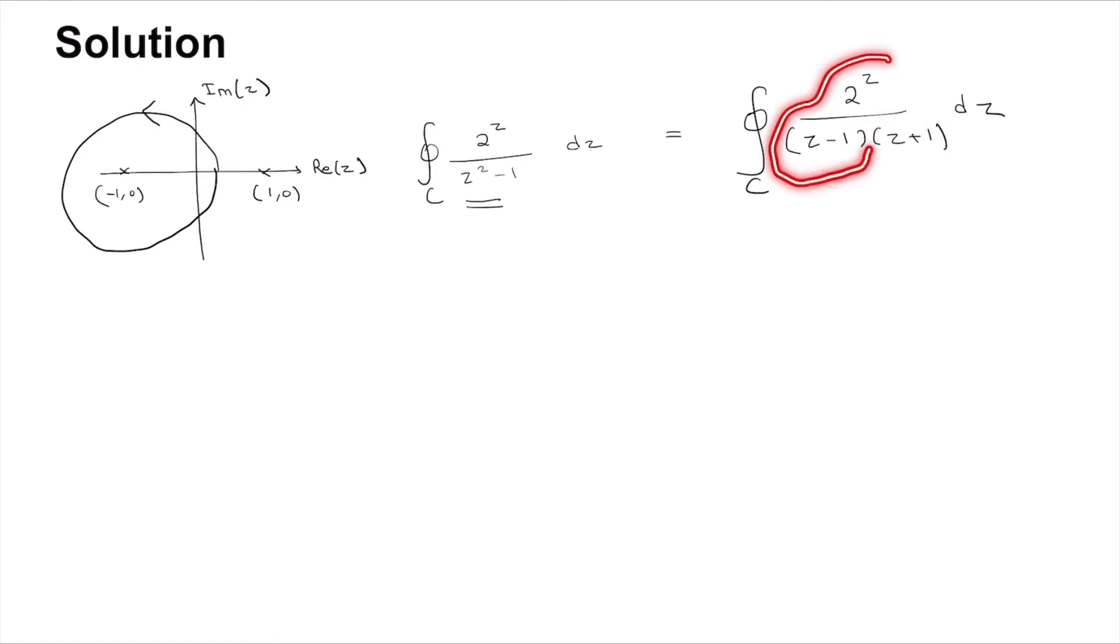This becomes 2πi times 2^(-1) / (-1 - 1). This whole thing becomes -πi/2.